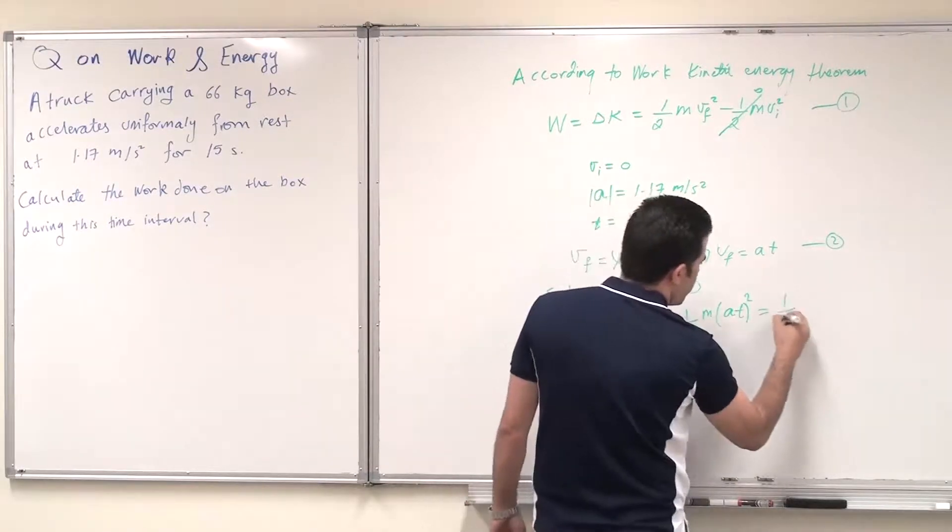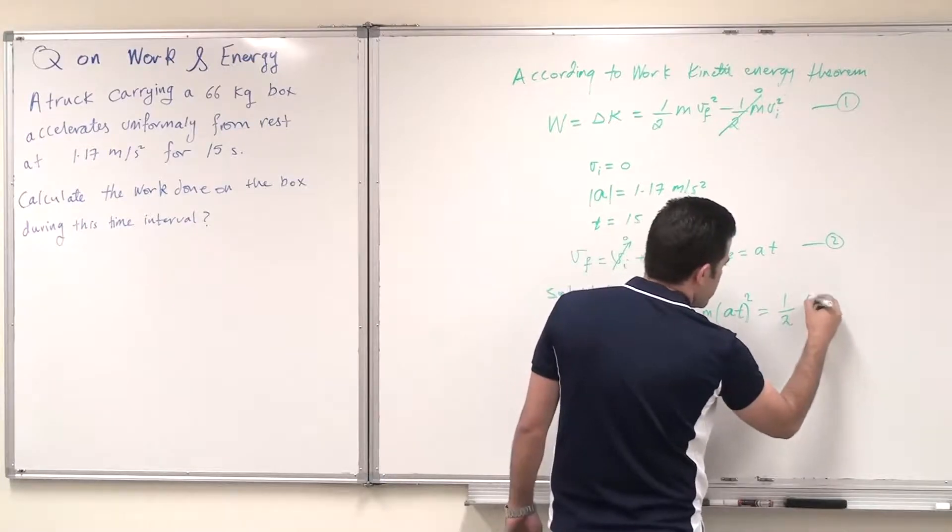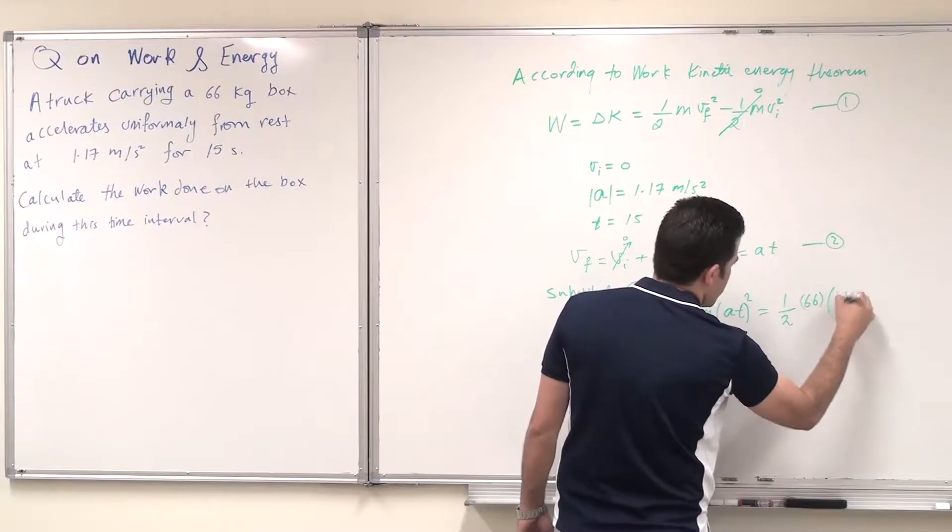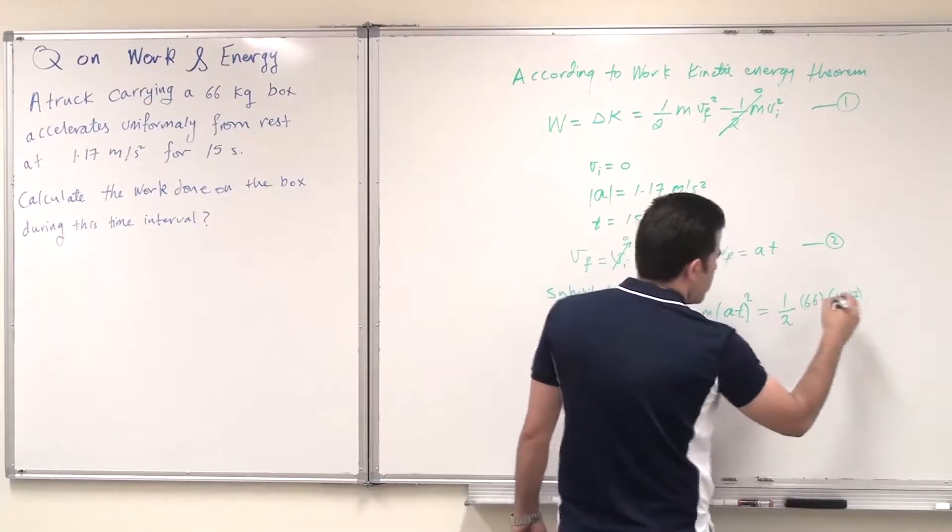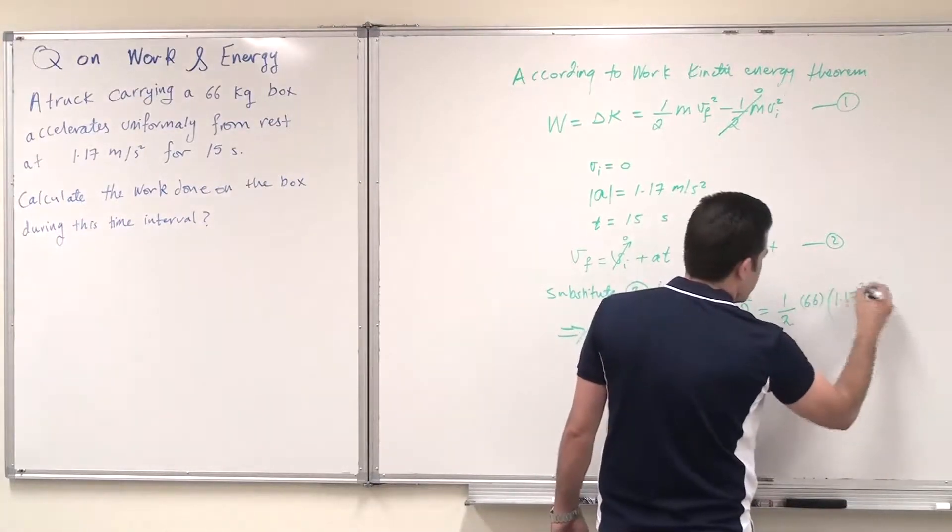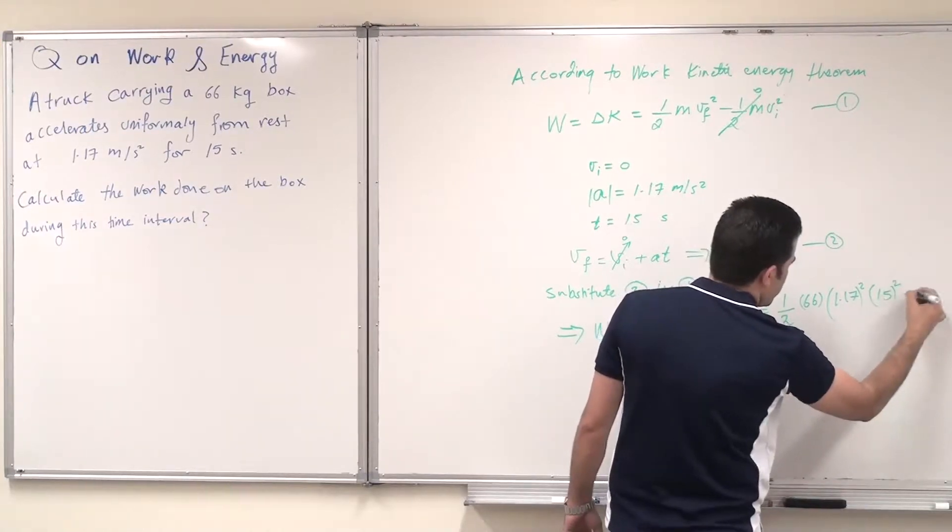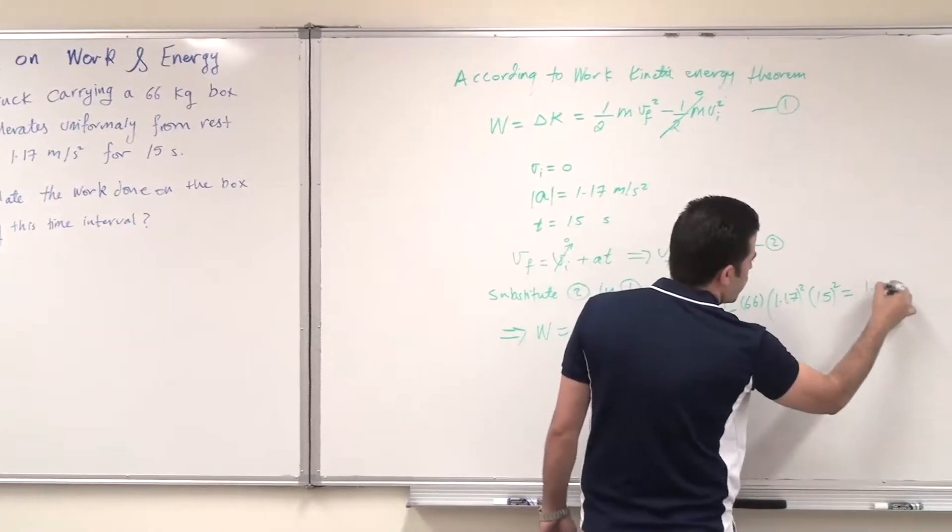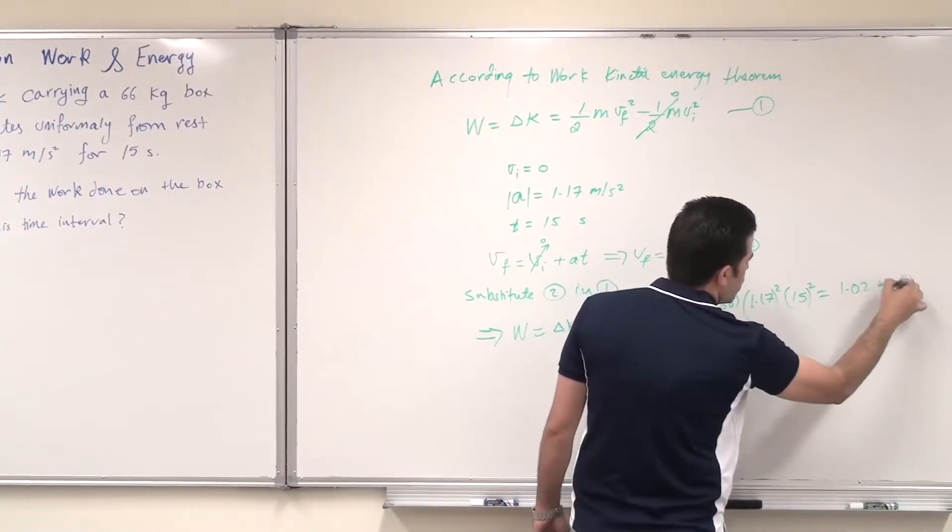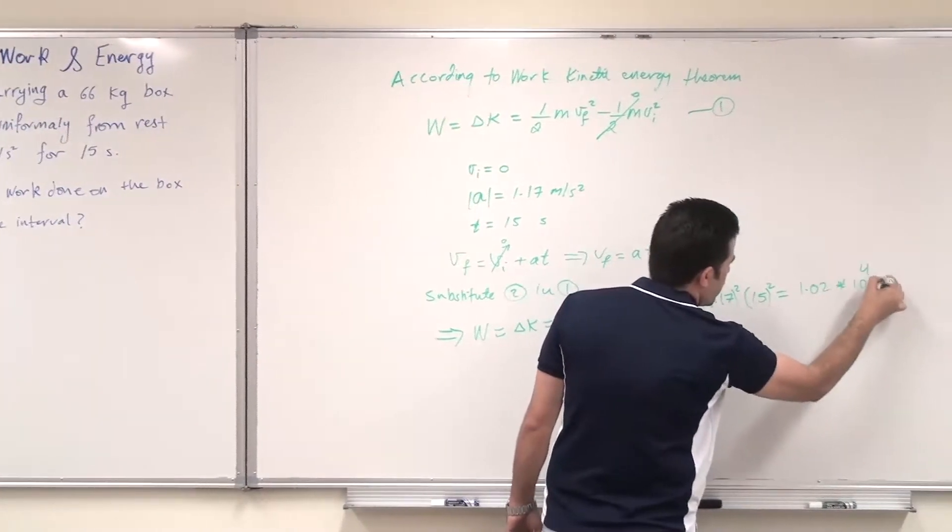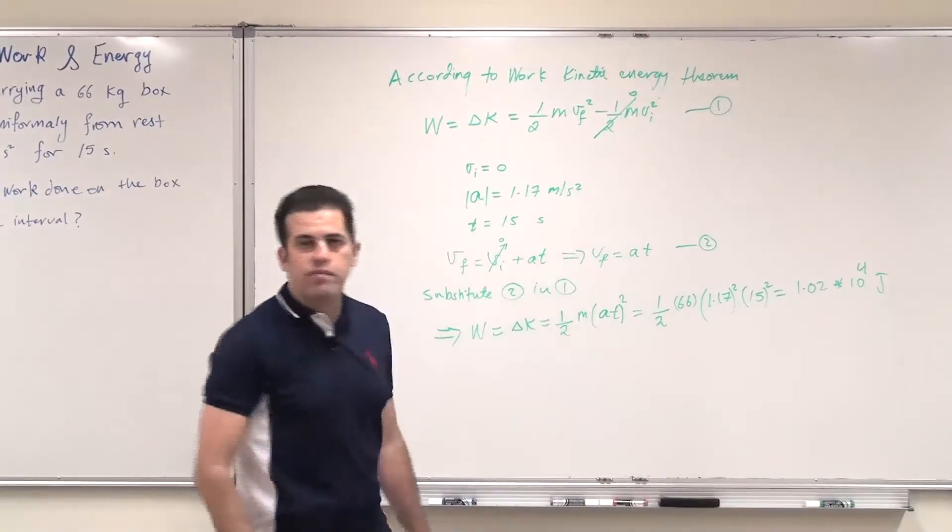which is half m is 66 kilograms by a, which is 1.17 squared, by t squared, which is 15 squared, which gives 1.02 times 10 to the power 4 joules, because it's the unit of work. Thank you.